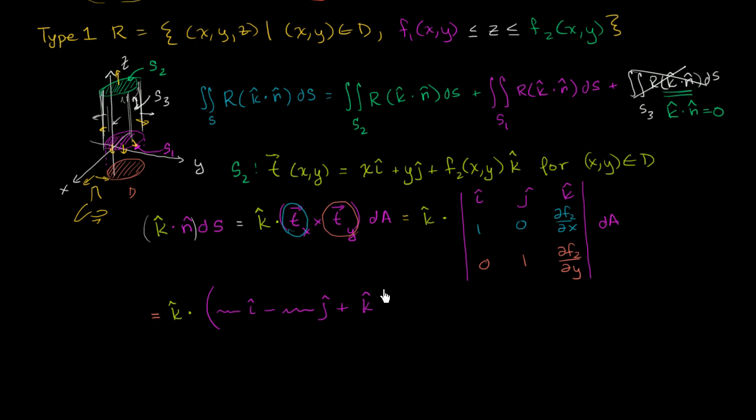We know it's 1 times the k unit vector. And so when you take this dot, and of course we have our dA out right here. But when you take this dot product, you only are left with the k components. And it's essentially just 1 times 1. You end up with the scalar quantity of 1. All of this business just simplified to dA.